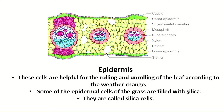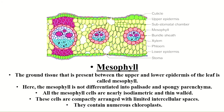The ground tissue present between the upper and lower epidermis of the leaf is called mesophyll. Here the mesophyll is not differentiated into palisade parenchyma cells and spongy parenchyma cells as found in the dicot leaf. All mesophyll cells are nearly isodiametric and thin-walled, compactly arranged with limited intercellular space. In the dicot leaf, more intercellular space is found in the spongy parenchyma cells compared to the palisade parenchyma cells, but here all cells have limited intercellular space.